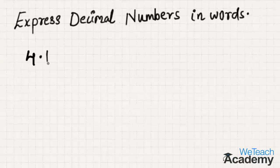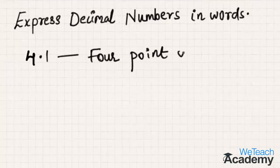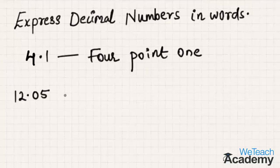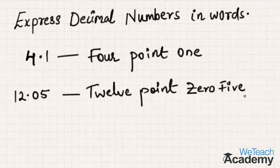Let us consider this decimal number and express it in words — this can be expressed as 4.1. Now let us consider one more decimal number. This can be expressed as 12.05.